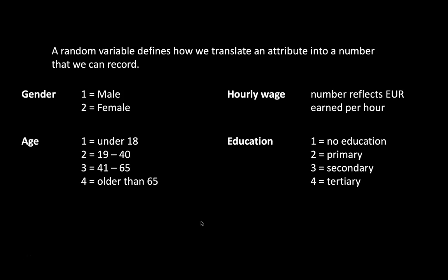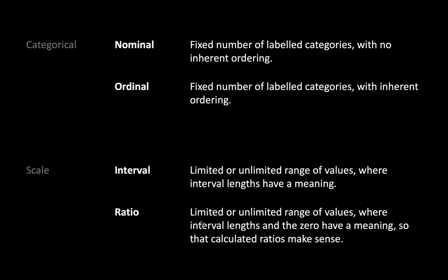You will see that these different variables are coded in different ways. Some can have many types of values — hourly wage can be anything on a very long scale. Education in this case can only have four possible values; gender can only have two. When we think about how we translate an attribute into a number, we can do that in different ways, and these can be more or less limited in terms of the values they can have. That is what we refer to as levels of measurement. Here are the four main levels of measurement, which can be further subdivided into two broader categories: categorical levels of measurement and scale levels of measurement.